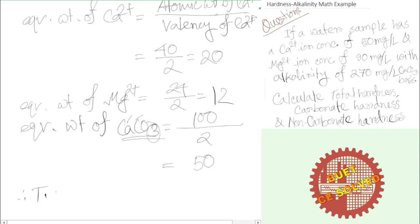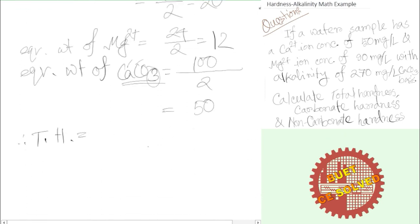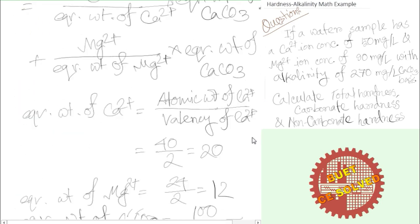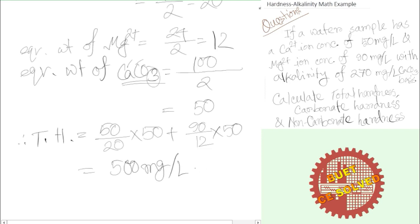Now using these values for total hardness with calcium and magnesium: calcium concentration is 50 mg/L divided by equivalent weight of calcium (20), multiplied by 50; plus magnesium concentration 90 mg/L divided by equivalent weight of magnesium (12), multiplied by CaCO₃ equivalent weight 50. That equals 500 mg/L as calcium carbonate basis.